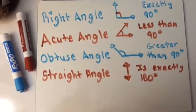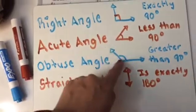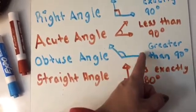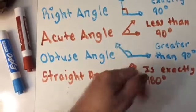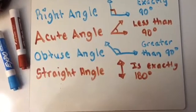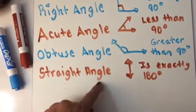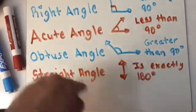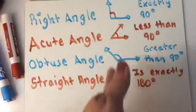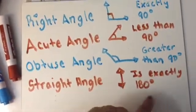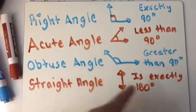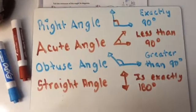Then we have the obtuse angle. This one is greater than a 90 degree angle. So if a 90 degree angle is up and straight, this one is greater than a right angle. So it's greater than 90 degrees. And then we have the straight angle. Remember, if we have the whole circle and it's 360 degrees but we cut it in half, that's exactly 180 degrees. So a straight angle is exactly 180 degrees.